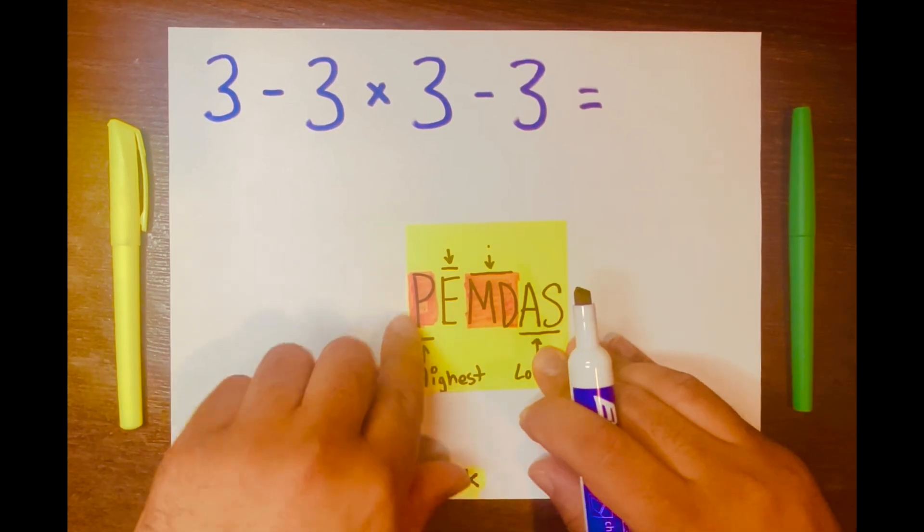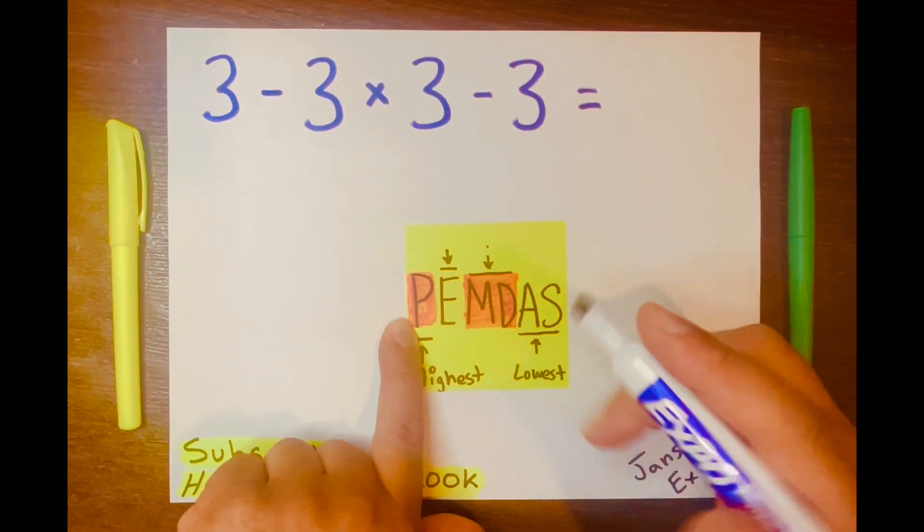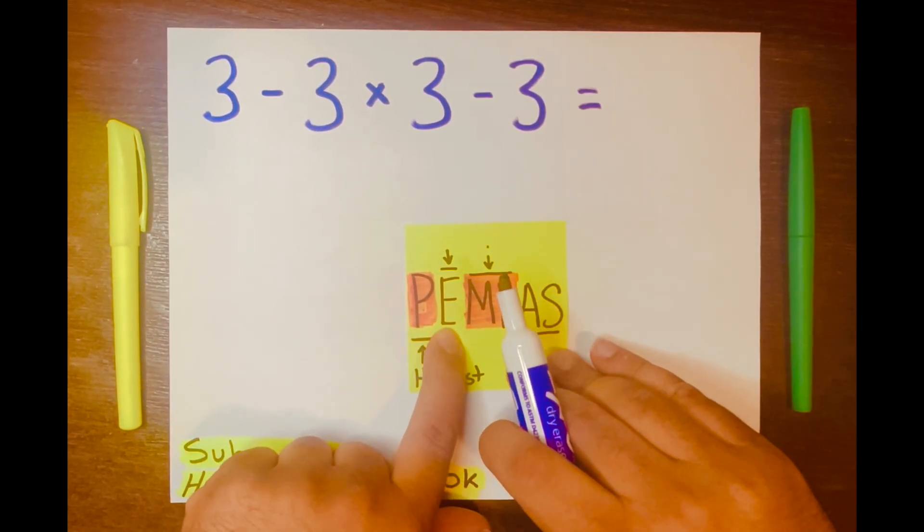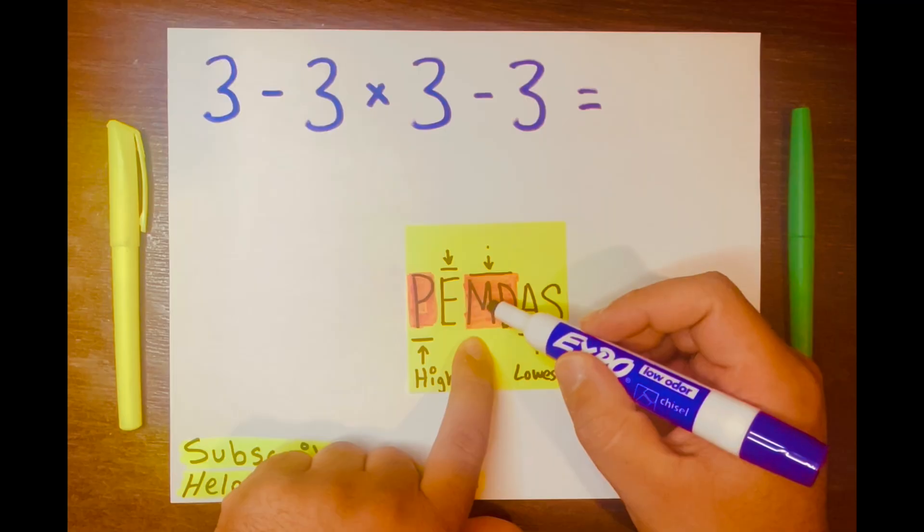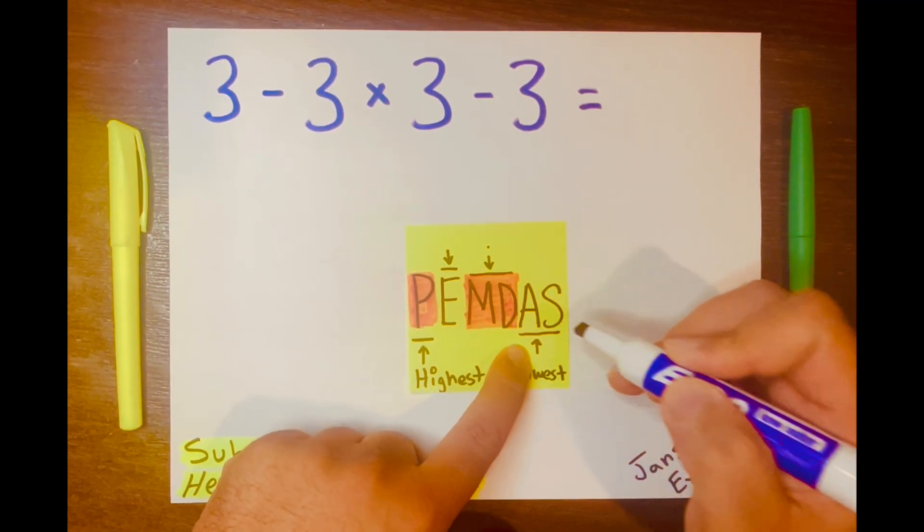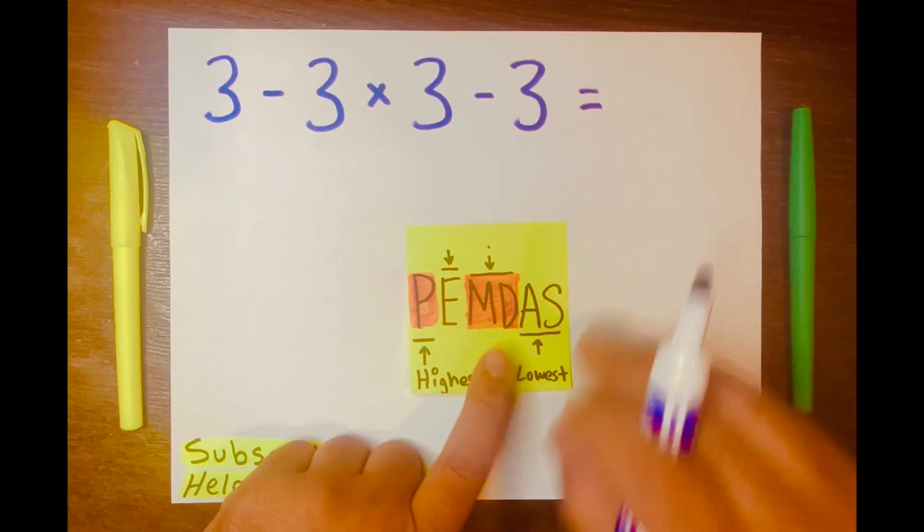Now, if you forgot what these letters mean: P stands for parentheses, E for exponents, M for multiplication, D for division, A for addition, S for subtraction. P will be the highest level and AS will be the lowest level.